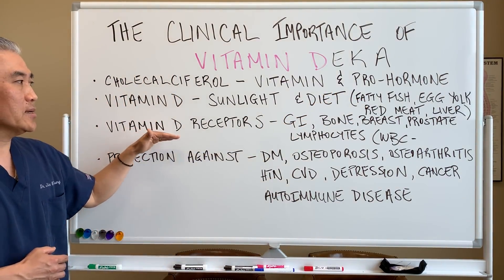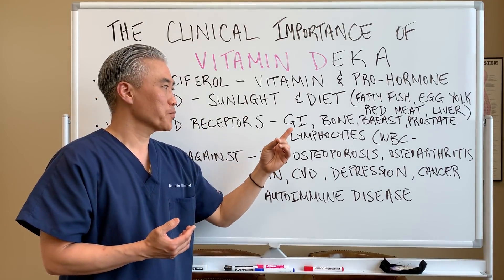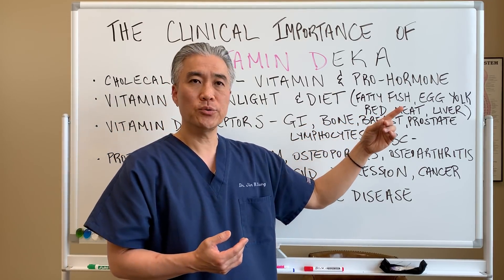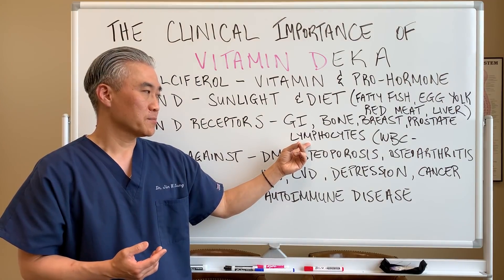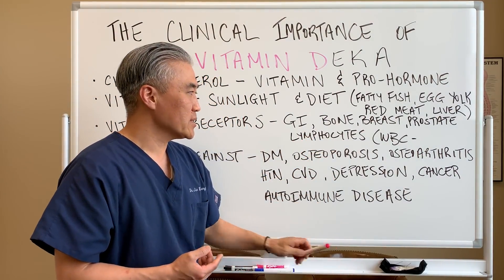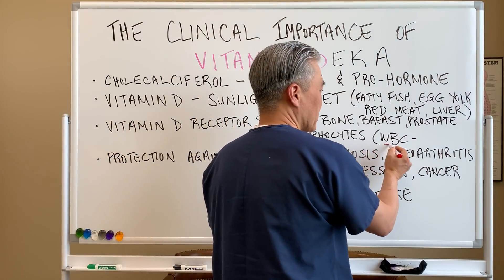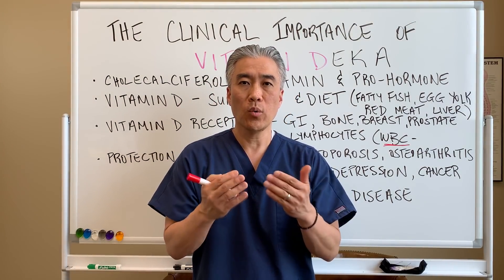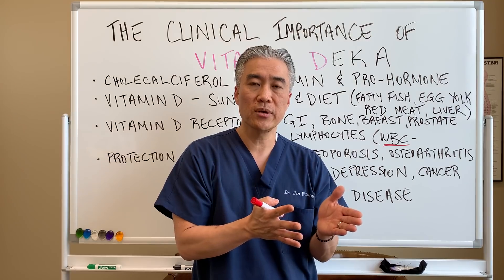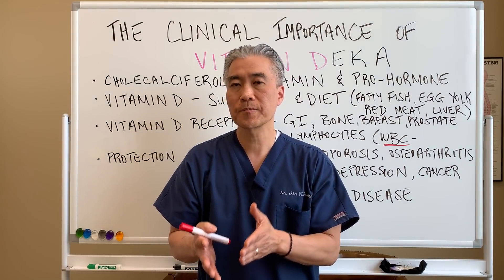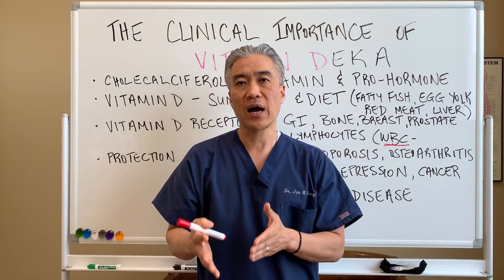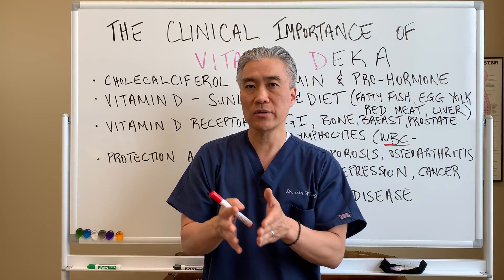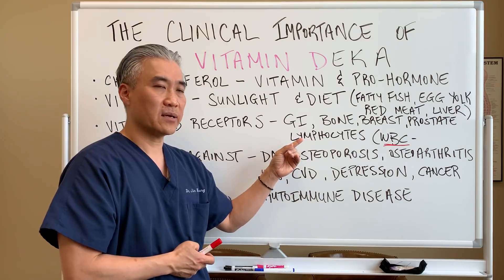Vitamin D has receptors in many different tissues: the gastrointestinal tract, bone, breast tissue, prostate tissue, and lymphocytes. When we say lymphocytes, we're talking about white blood cells, and white blood cells can be broken down into different components — neutrophils, which fight bacterial infections, and lymphocytes, which fight viral infections.